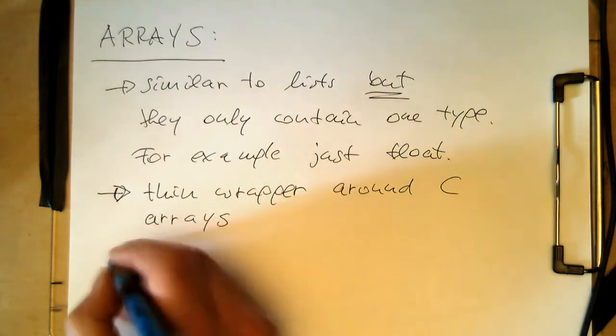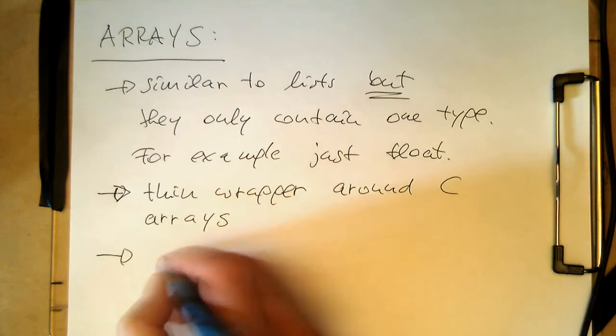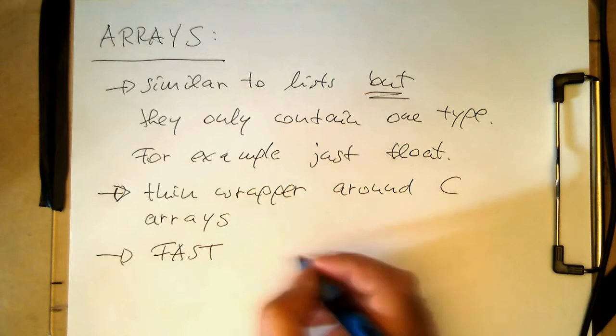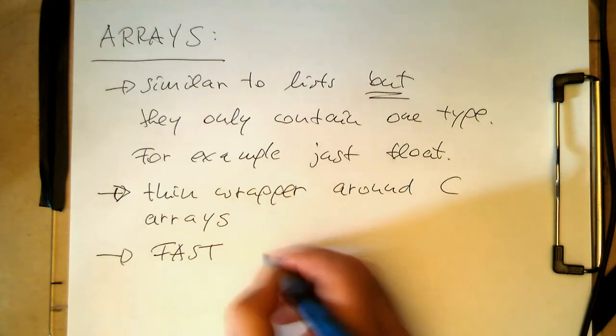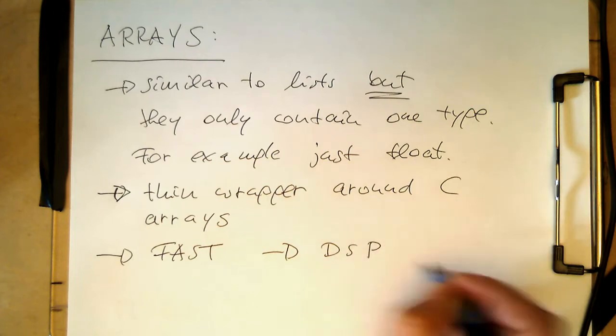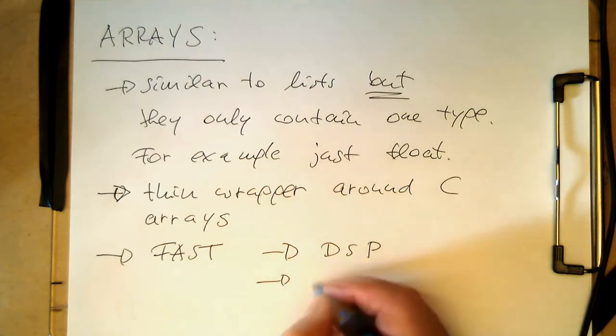This means arrays are fast, and they are for that reason good for DSP and number crunching.